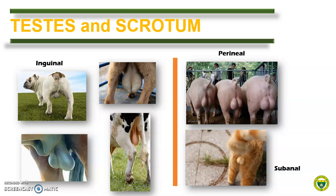Let us begin with the external appearance and location of the testicle. As you can see here, we divide the animals based on their location. Dogs, ruminants, and horse have testis located at the inguinal region. The testicle of pig is anatomically located at the perineal region, while in cats it is located sub-anally.